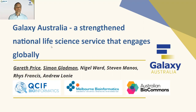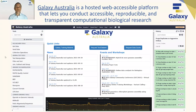Galaxy Australia is a hosted, web-accessible platform that lets you conduct accessible, reproducible, and transparent computational biological research. In essence, it is a web interface that allows users to interact with computing infrastructure in Australia.